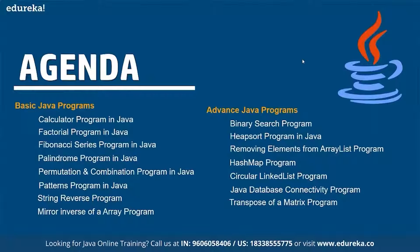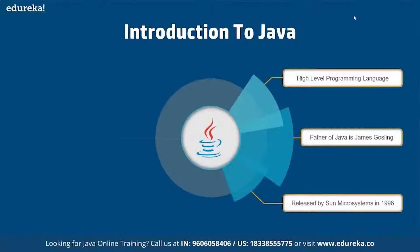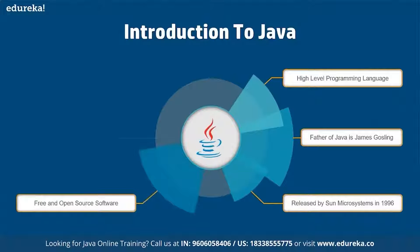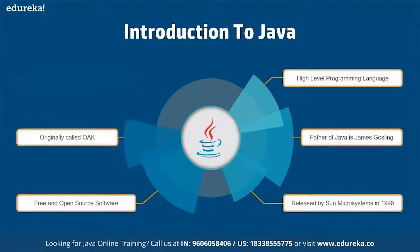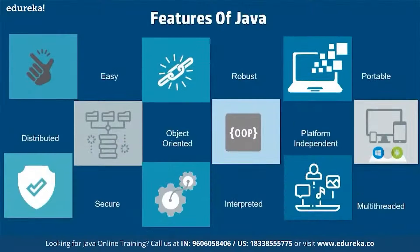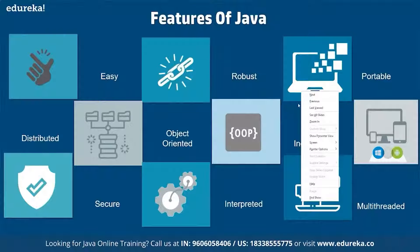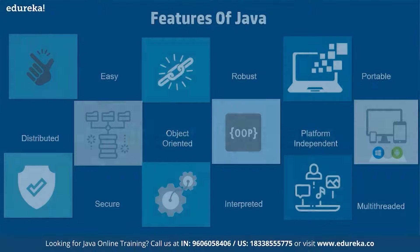Java is a high-level programming language and is the core of many other programming languages. It was released by Sun Microsystems and developed by James Gosling. It is free and open source software with no licensing involved, and was originally called 'Oak'. Its key features include being easy to use, following distributed architecture, being more secure due to multi-level abstraction and data security features, being fully object-oriented, highly interpreted, platform-independent, and multi-threaded.